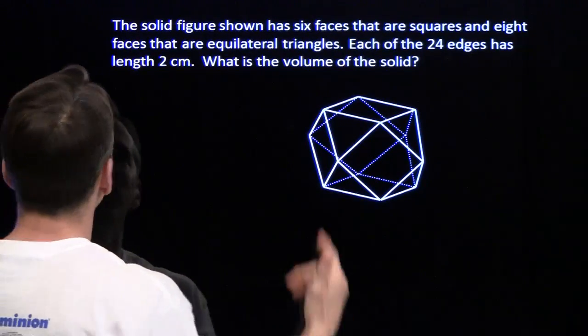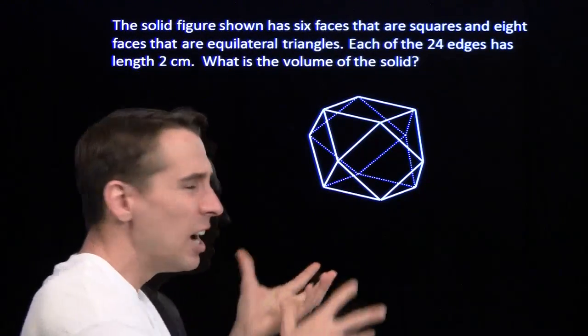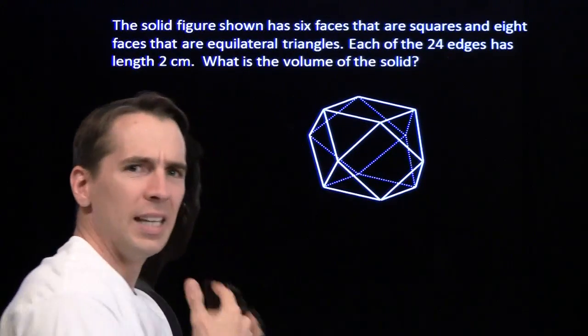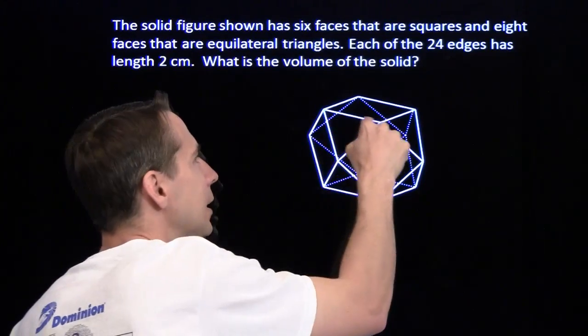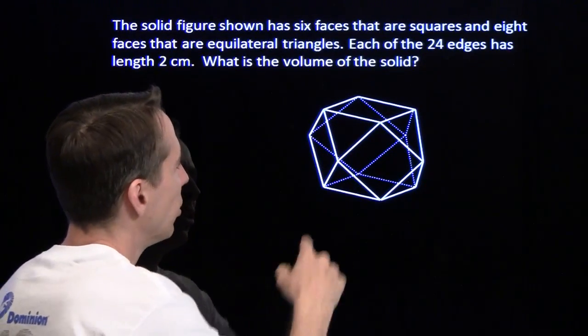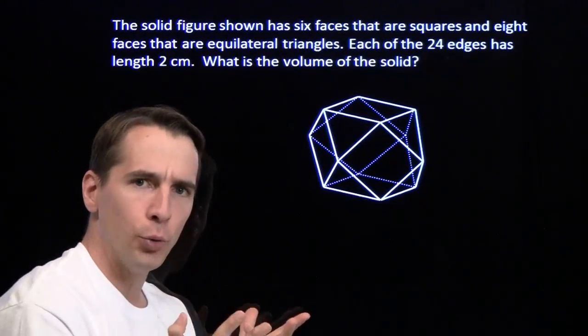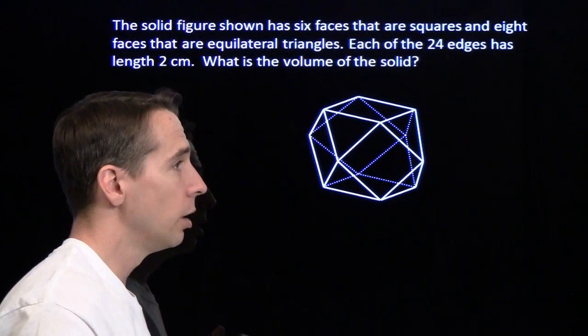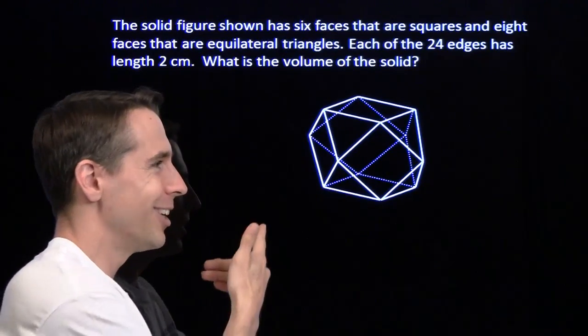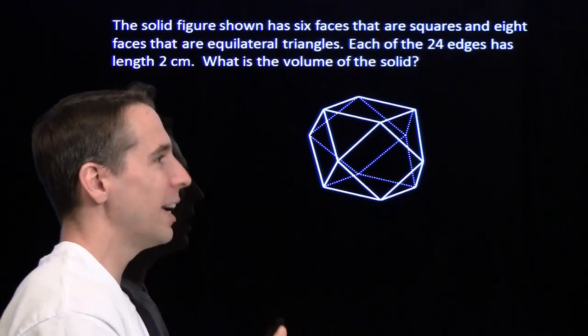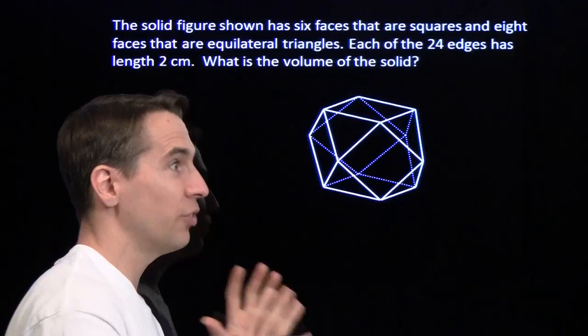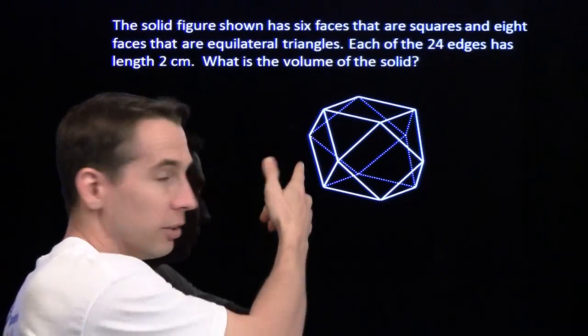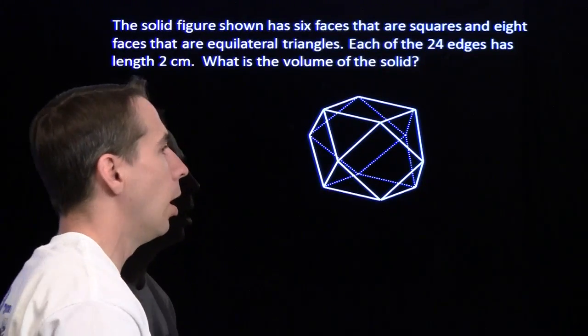Alright, let's see what you can do with this one right here. We have a solid figure shown that has 6 faces that are squares, like this one, and then it has 8 faces that are these little equilateral triangles. Now each of these edges has length 2. We want to find the volume of the whole solid. What? What? You see a cube? Harvey, that's not a cube. No, no. Cube has 6 faces, period. Only 6 faces. They're all squares. It doesn't have any triangles. I don't know what he's talking about. It's not a cube. Do you? That's not a cube, right? No. Not a cube at all.